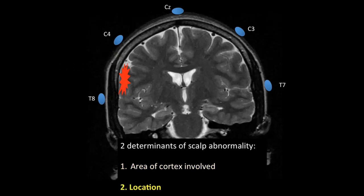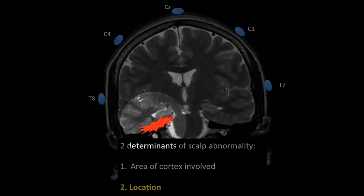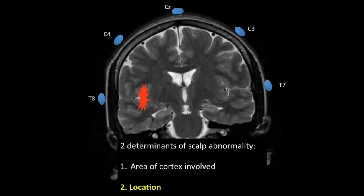The other main determinant is the location of the cortical activity. A very superficial area of cortex is more likely to be picked up by scalp EEG electrodes. If a deeper area is involved — such as the cingulate gyrus, mesial temporal structures, or insular cortex — it may be less likely that such abnormalities would be detected by the more distant scalp electrodes.